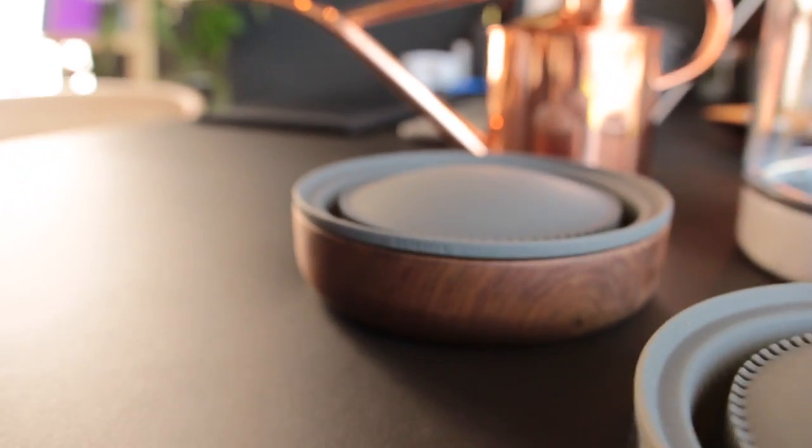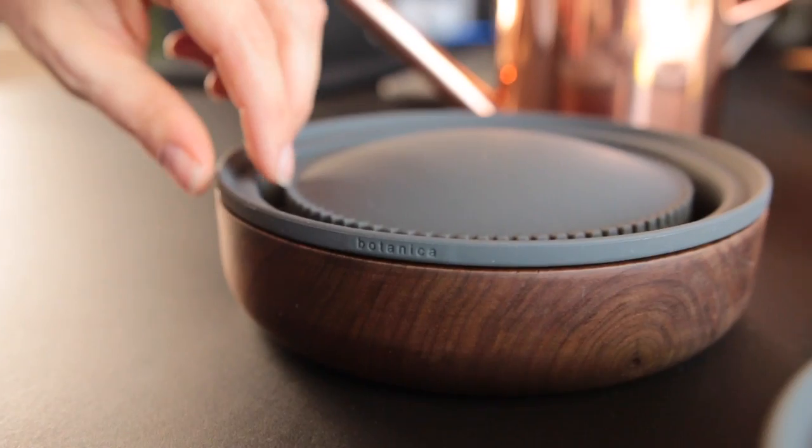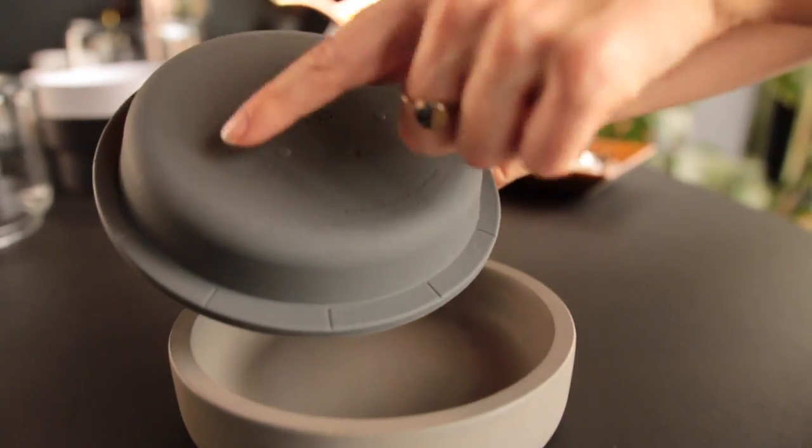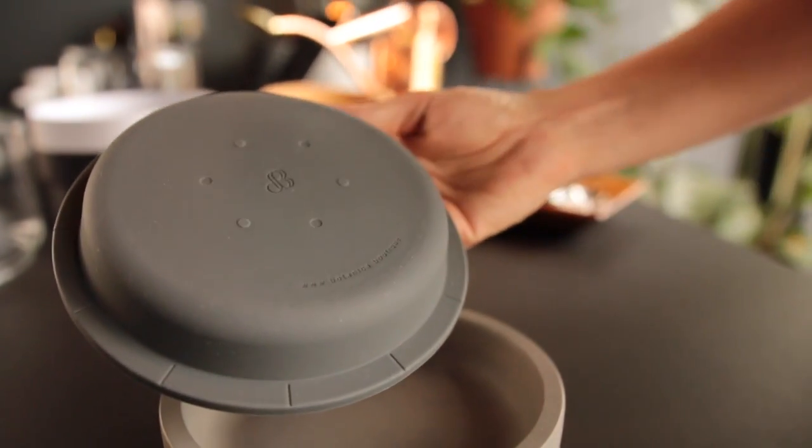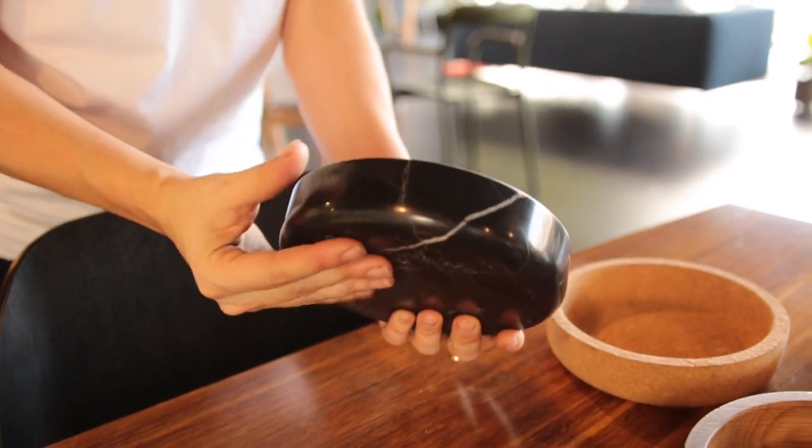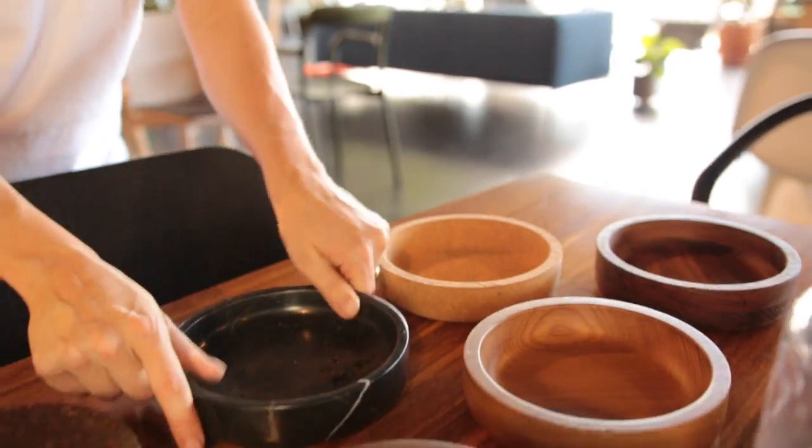Choose either the moss insert with water reservoir, or plant insert, which has more room for soil and optional drainage points in the marble and concrete versions. All inserts are interchangeable with our selection of marble, timber, concrete and cork bases.